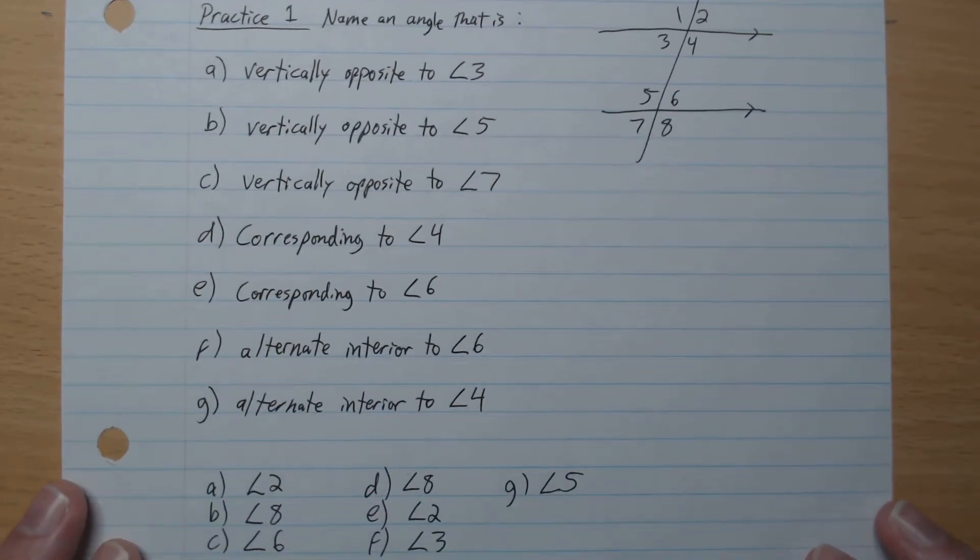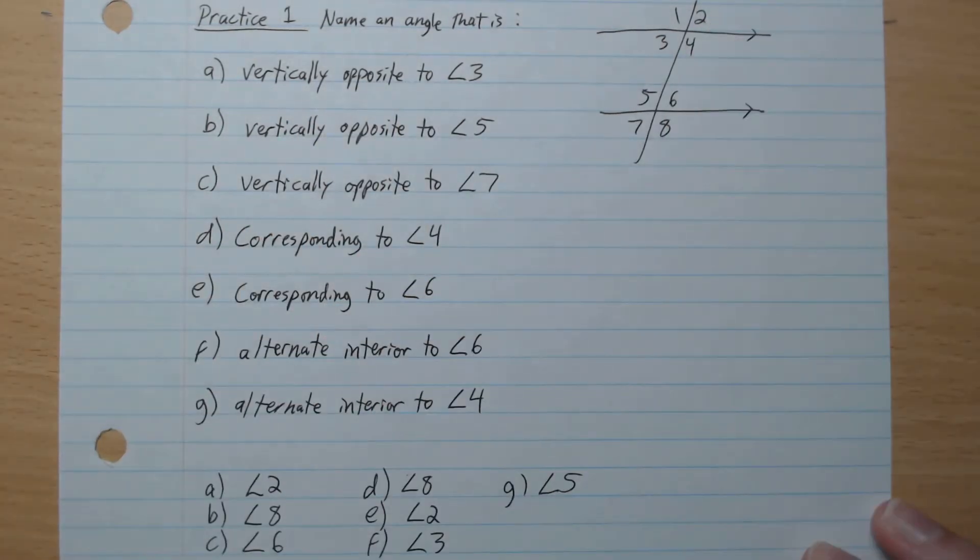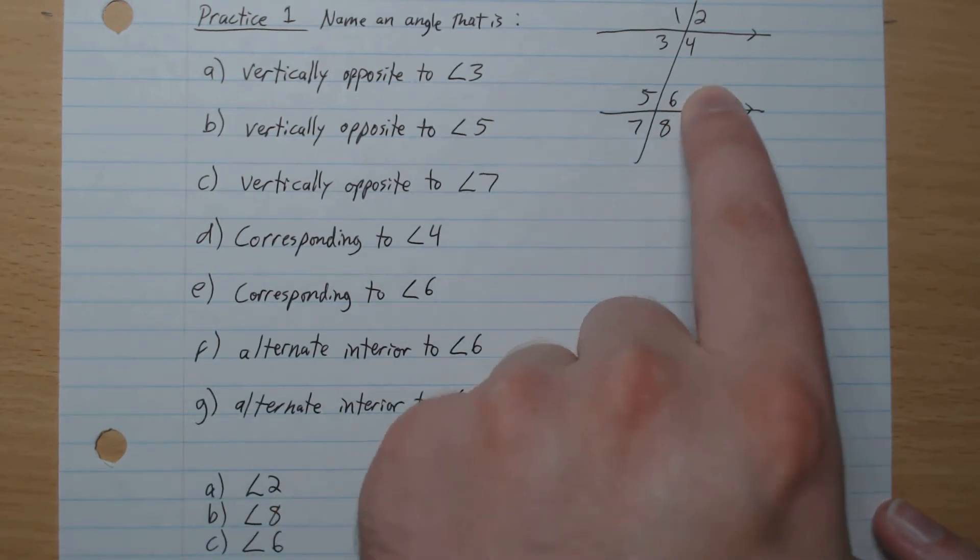Here are the answers. So opposite to 3, 2. Opposite to 5, 8. Opposite to 7, 6.